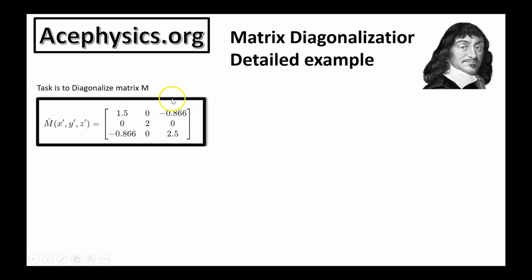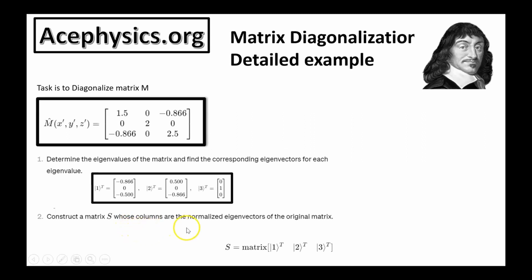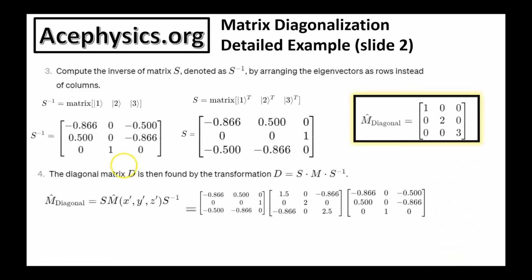Now let's do an example. Here's a matrix M which is not diagonal — there are numbers off the diagonal. The task is to diagonalize matrix M. Step 1: determine the eigenvectors using MATLAB; these are the three normalized eigenvectors. Step 2: construct transformation matrix S whose columns are the normalized eigenvectors. Step 3: find the inverse of S, which has the eigenvectors along the rows instead of columns. Step 4: M diagonal is found by the transformation SMS inverse, yielding the diagonal matrix M.